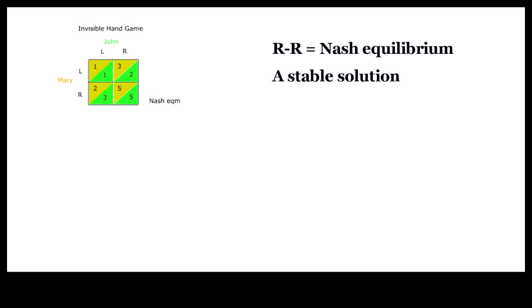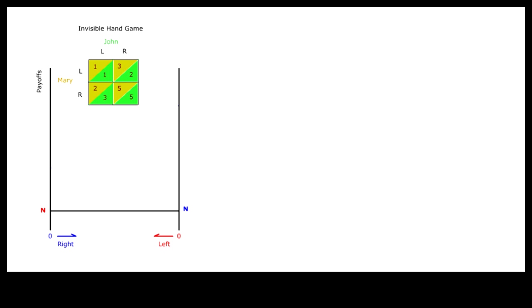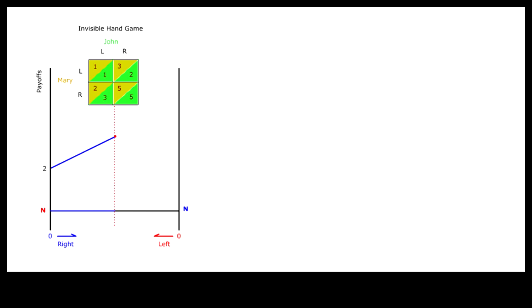This payoff matrix is difficult to grasp quickly, and its two-person limit is unnecessarily confining. Let's graph the payoff matrix by extending it to n number of people. The payoff for choosing R goes linearly from left to right as the number of people choosing R increases. The payoff for choosing L goes linearly from right to left as the number of people choosing L increases.